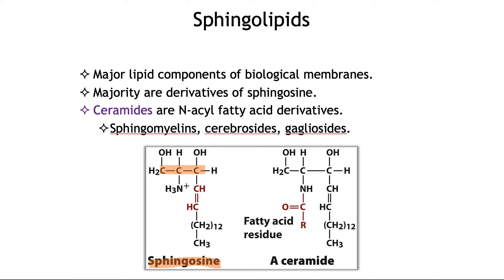Sphingolipids are all derivatives of a ceramide. In a ceramide, you have a fatty acid linked via an amide bond to the amine at carbon-2. This is one easy way to differentiate between glycerophospholipids and sphingolipids — the presence of an amide bond at carbon-2.